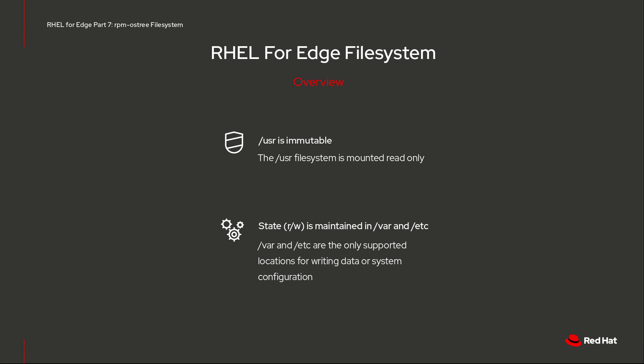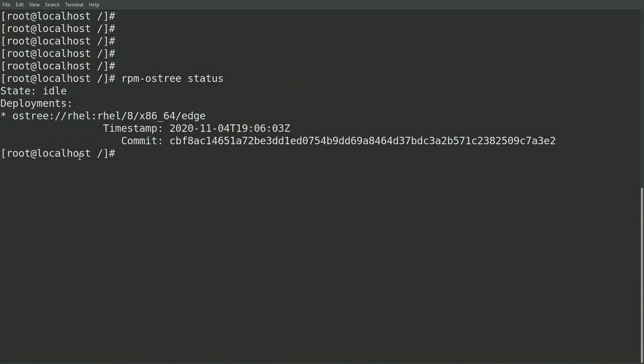At a high level, the user directory contains the OS binaries and files, and is mounted read-only and is immutable. The var directory is mounted read-write, is shared between deployment images, and is where data can be written to. Each image also has their own read-write etsy directory to store system configuration. The var and etsy directories are the only supported locations for writing data or system configuration.